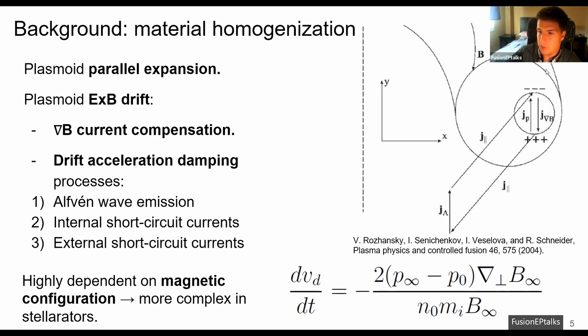due to the movement of charges inside an inhomogeneous magnetic field, the ions and electrons have different grad-B drift and this current is compensated by the polarization of the plasmoid. Due to this process, the plasmoid experiences a cross-B drift whose acceleration can be calculated according to these formulas.